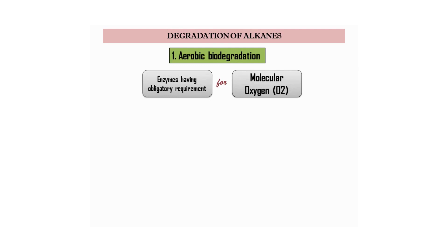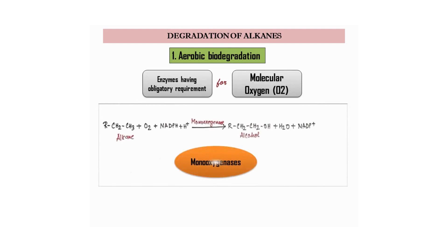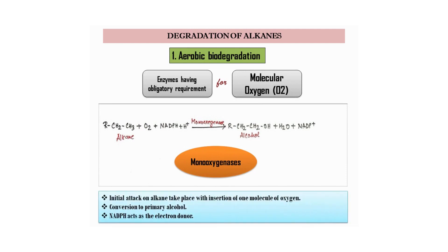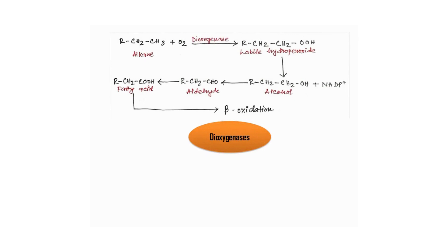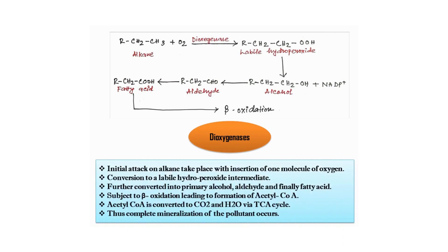For the aerobic biodegradation of alkanes, enzymes with an obligatory requirement for molecular oxygen are involved. The main enzymes are monooxygenases and dioxygenases. Monooxygenases initially attack the alkane with insertion of one molecule of oxygen, converting it into a primary alcohol, where NADPH acts as the electron donor. In the case of dioxygenases, the initial attack on the alkane inserts one molecule of oxygen, converting it into a labile hydroperoxide intermediate, which is further converted into alcohol, then aldehyde, and finally a fatty acid.